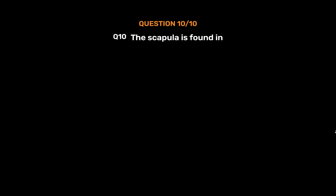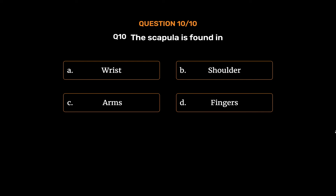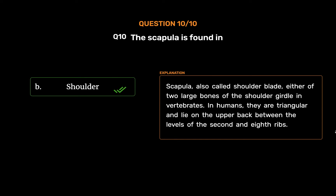Question No. 10. The scapula is found in — Option A: Wrist. Option B: Shoulder. Option C: Arms. Option D: Fingers. The correct answer is Option B: Shoulder. The scapula, also called the shoulder blade, is either of two large bones of the shoulder girdle in vertebrates. In humans, they are triangular and lie on the upper back between the levels of the second and eighth ribs.